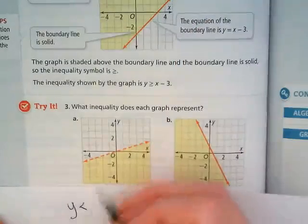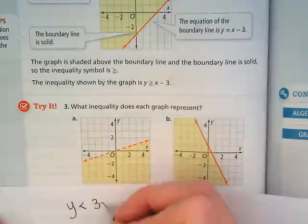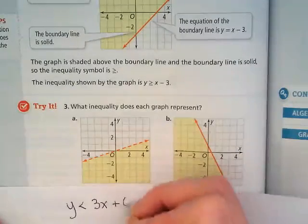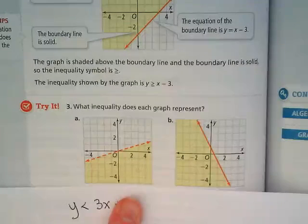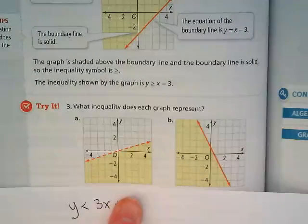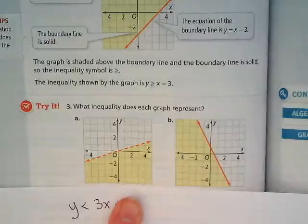Right? So this is going to be 3x, and if you want to keep track of it, you could put plus zero, or it's just y is less than 3x. Make sense?